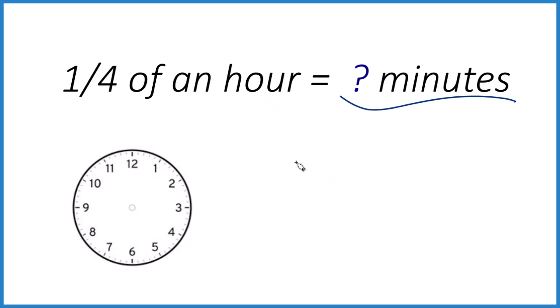Probably the easiest way is to take your one-fourth here, and we know that one hour is 60 minutes. So to get one-fourth of 60, we just take one-fourth times 60 minutes here, and that'll give us how many minutes are in one-fourth of an hour.